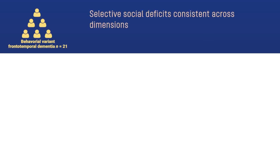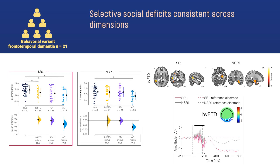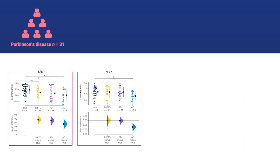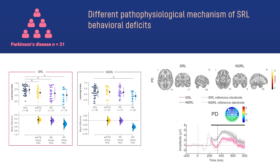In frontotemporal dementia, neurodegeneration and lack of medial frontal negativity modulations may explain their failure to use social cues to improve learning, possibly related to social prediction error coding alterations. In contrast, preserved social medial frontal negativity modulations and lack of cortical correlates in Parkinson's disease indicate a different pathophysiological mechanism, possibly related to frontostriatal dysregulations.